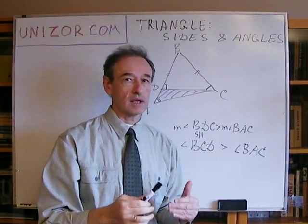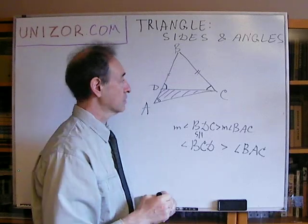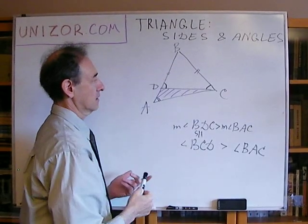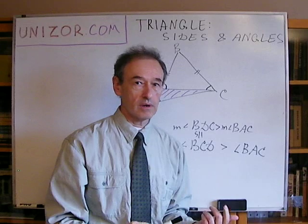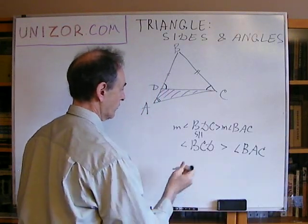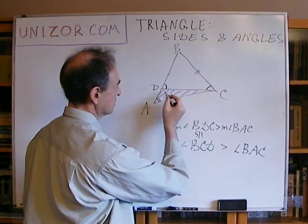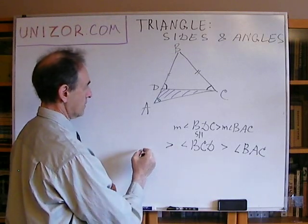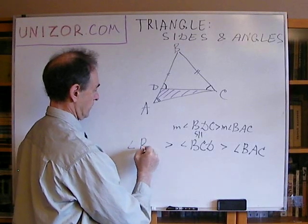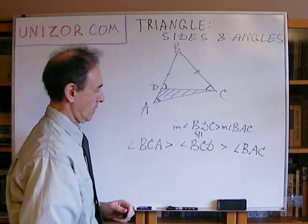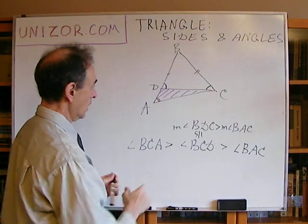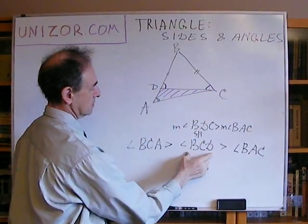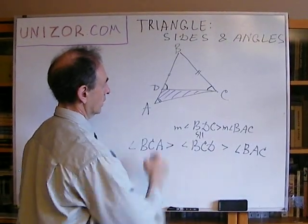But now, here is, again, this not exactly rigorous logical consideration. Angle BCD is inside the angle BCA, and that's why it is a smaller angle, since it's a part of a whole. So, this angle BCD is greater than BAC, but at the same time, it's smaller than angle BCA. So, angle BCA is greater than BCD, which in turn greater than angle BAC.